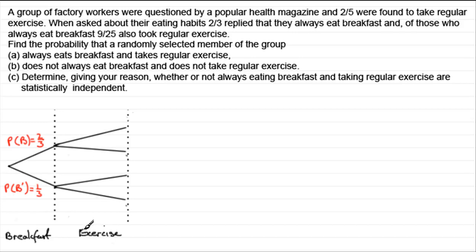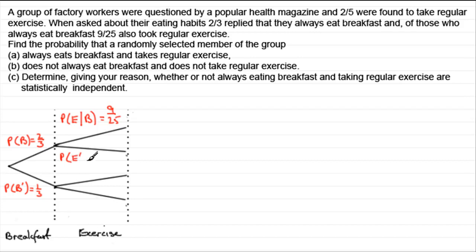Now we go on to taking exercise, and you've got to be careful here. This branch is the probability of taking exercise given that you had breakfast — not just the probability of E on its own. We're told that of those people that had breakfast, nine twenty-fifths also took regular exercise, so that probability is 9 over 25. That means the probability of not taking exercise given breakfast is one minus nine twenty-fifths, which gives us sixteen twenty-fifths.